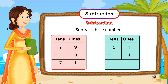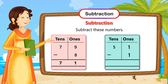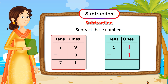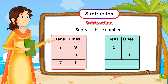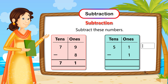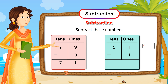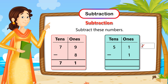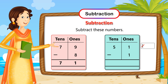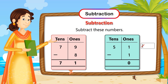Now let's subtract 1 from 51. As we start subtraction from the right side, or the 1s column, the first digit is 1. So let's draw 1 line. Now we need to cut that 1 line, as we need to subtract 1 from 1. So we are left with 0 lines, so let's write 0 in the 1s column.